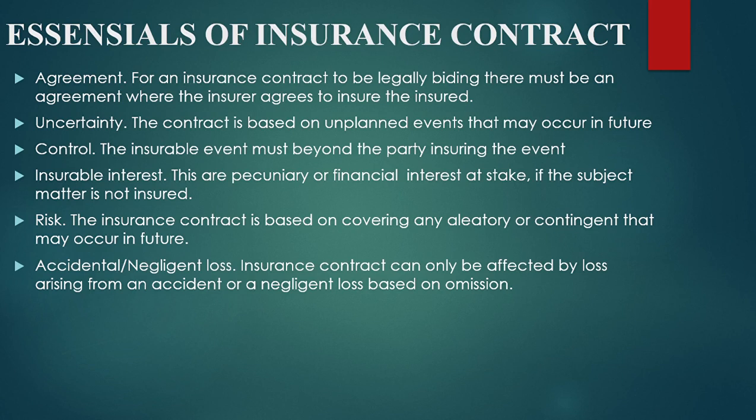The insurance contract is based on covering any rotary or constituents that may occur in future. So the insurance contract is based on risks which are exposed to the insured in future. Accidental or negligent loss: an insurance contract can only be affected by loss arising from accident or negligent omission. The insurance contract does not cover any intentional damage.